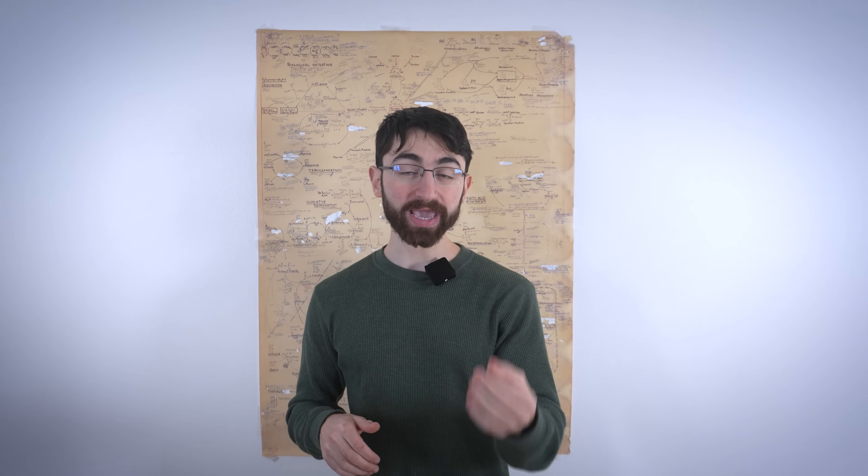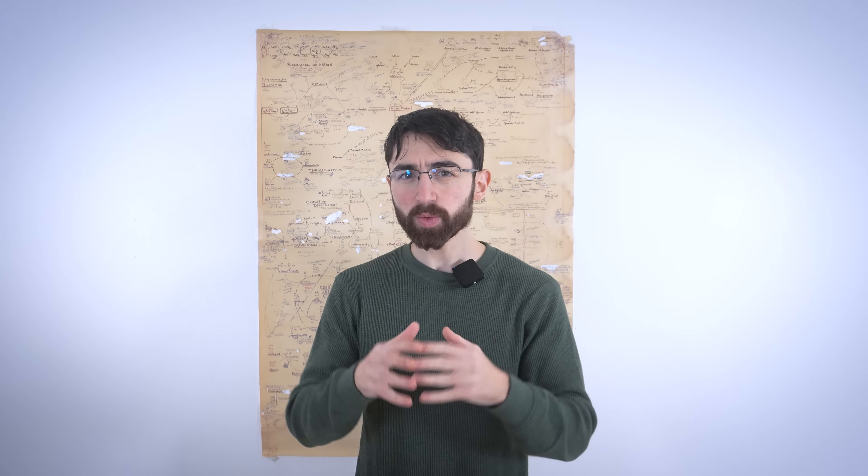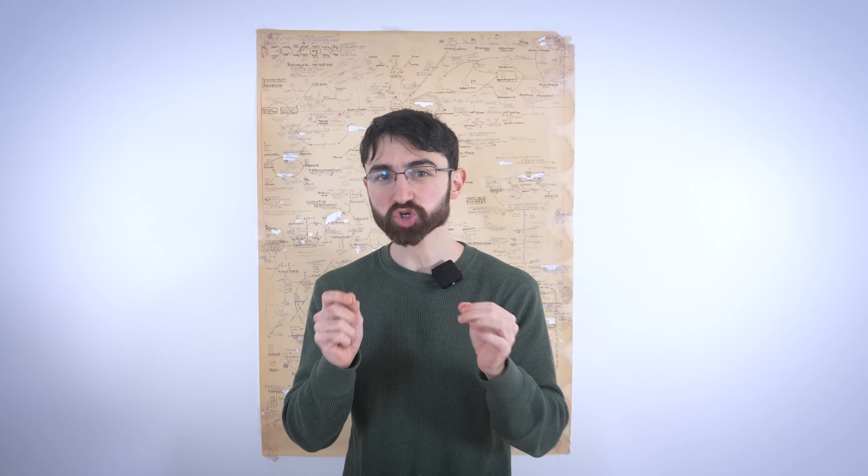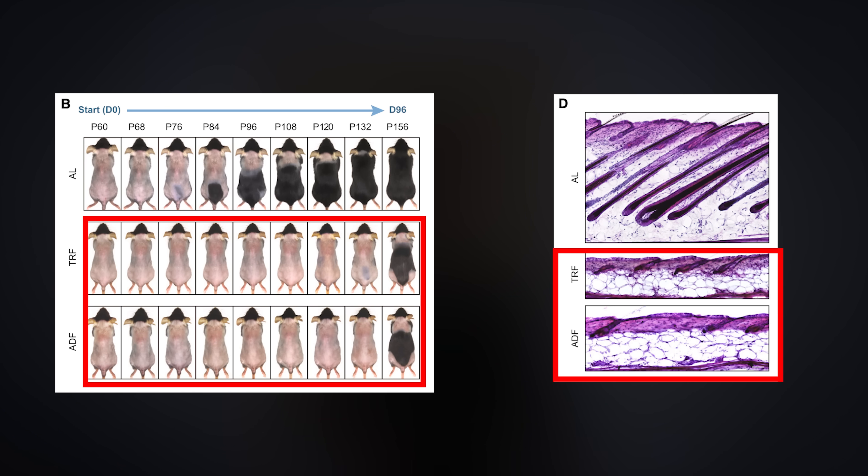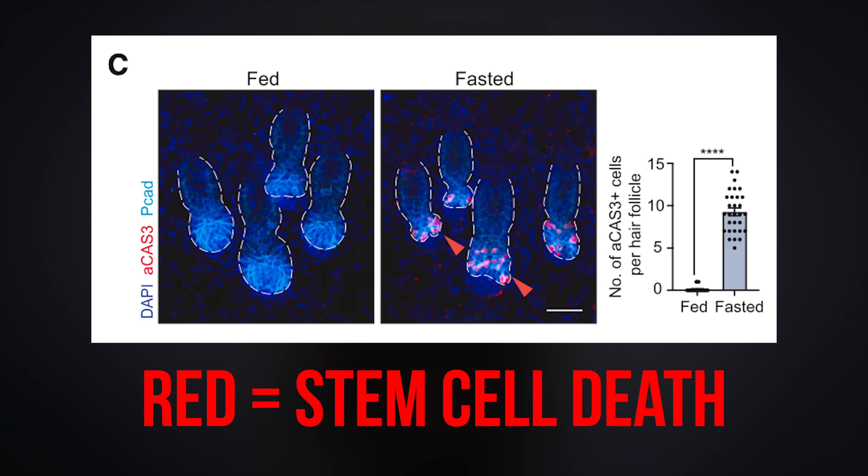Now, the researchers began working in mice because they wanted to dissect the mechanism in a tightly controlled fashion, which is best done in animals. And they subjected the mice to common intermittent fasting routines, including 16-8 fasting, where you fast for 16 hours a day and then feed for 8, and alternate day fasting, where you eat every day. And they found that each fasting regimen impaired hair follicle regeneration. And additionally, that fasting increased markers of programmed cell death, apoptosis, in the hair follicle stem cells.